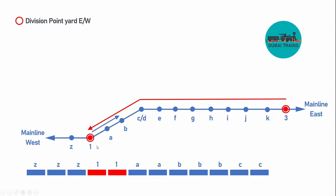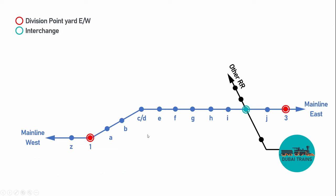The cars will be shuffled and sorted at the division point yard and then go to their final destination. As you see, the first three cars go to Z, the two red ones stay at division point yard one, spotted at a local industry, and cars A, B, and C move back down the line a little bit via the local and are spotted at their designated locations.